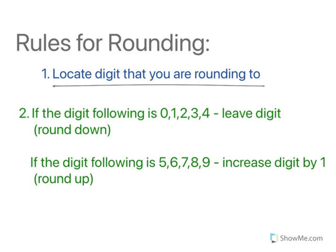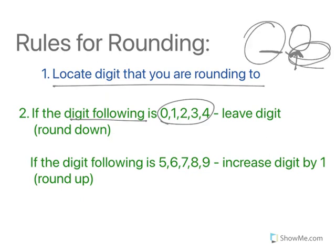So you've got to locate that. I like to underline it and say, I'm rounding to this digit. So we always look at one digit past, the digit following. If that following digit is less than 5, we leave this alone, and everything back here becomes 0s.